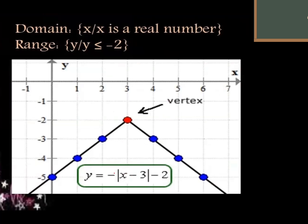Another example: negative absolute value of (x − 2) minus 2. If your x is 0, you get negative absolute value of negative 2 minus 2, which is negative 3 minus 2 = negative 5. But there's a negative outside, so negative 3 minus 2 = negative 5. So at x = 0, y = negative 5. Here is the graph. Your domain is the set of real numbers, and your range is y less than or equal to negative 2.